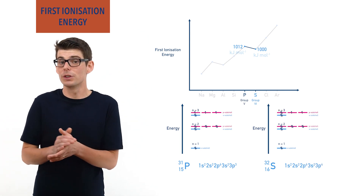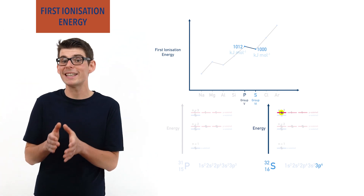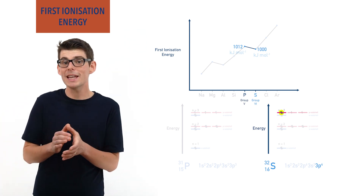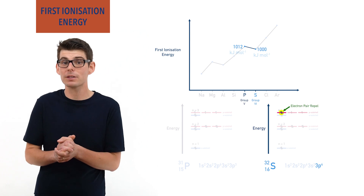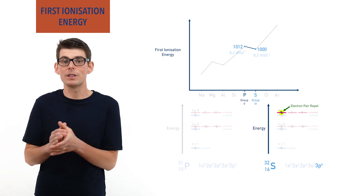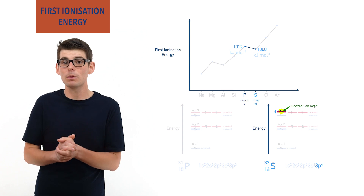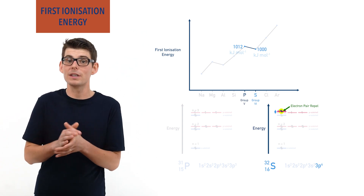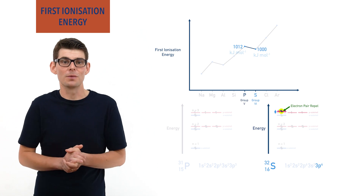The extra electron that sulfur has must go into an already half-filled p orbital. The two negatively charged electrons repel slightly, increasing their energy and making them slightly less stable. It is therefore easier to remove one of these electrons compared to an outer electron from phosphorus.